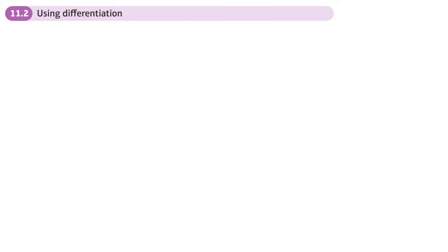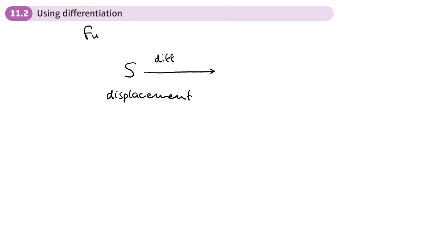This is the second section of the variable acceleration chapter, using differentiation. We start with S for displacement — S is our displacement, and these are all going to be functions of T. You can have S equals something which is a function of T. If you differentiate that...